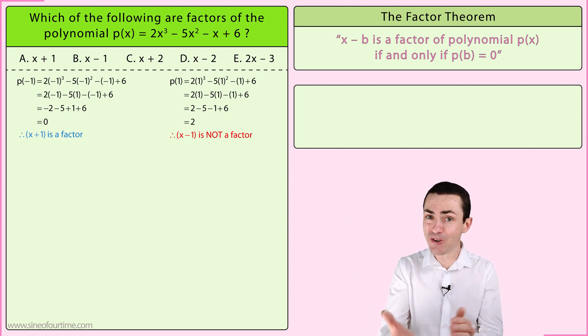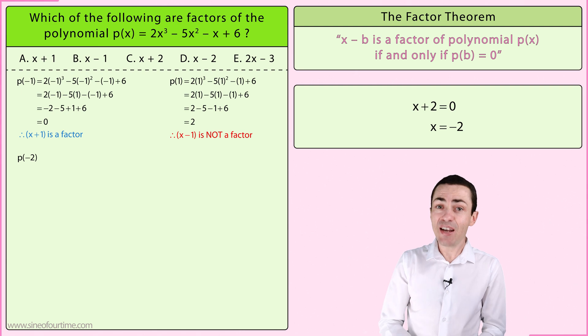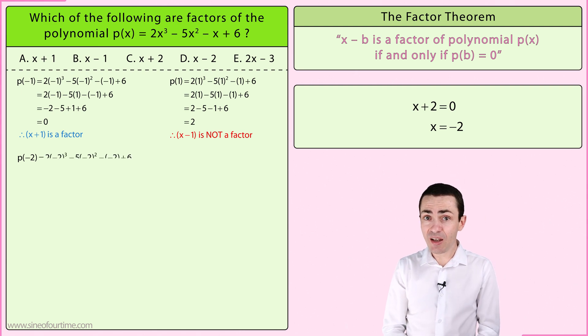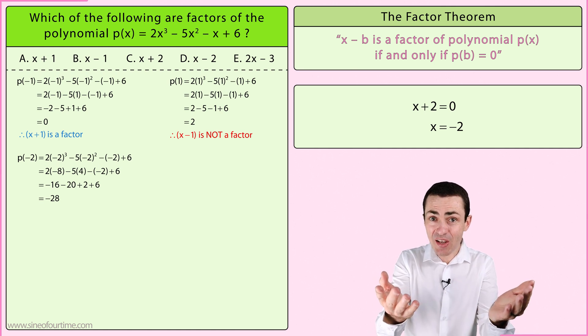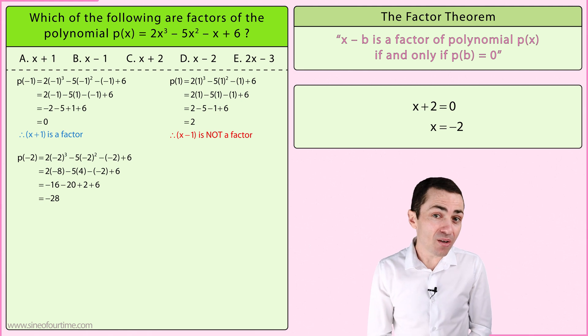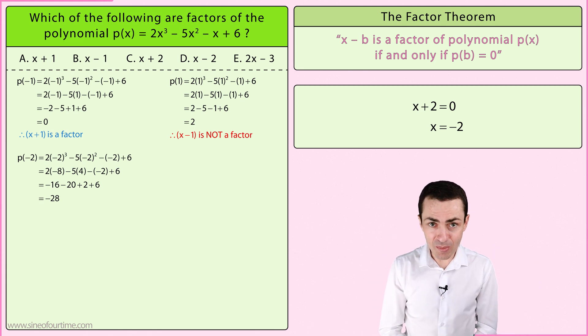Continuing with this process, let's test the third binomial by substituting negative 2 into the polynomial and simplifying. As we can see, we get a value of negative 28, which is not equal to zero, so we can conclude that x plus 2 is not a factor of the polynomial.